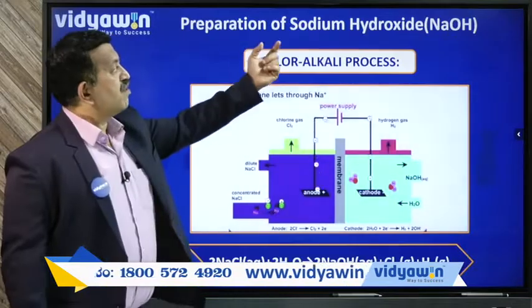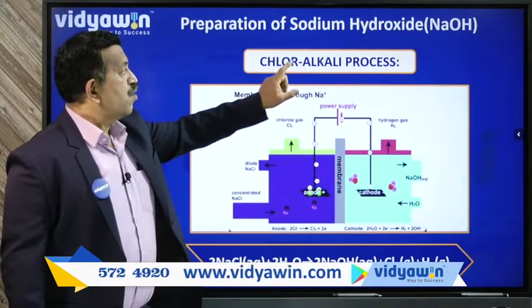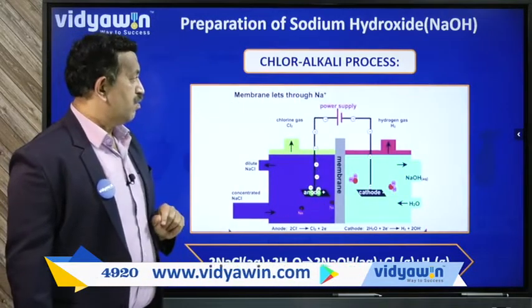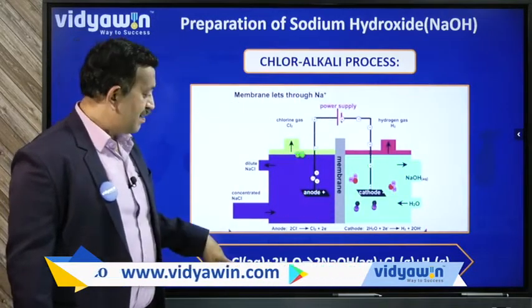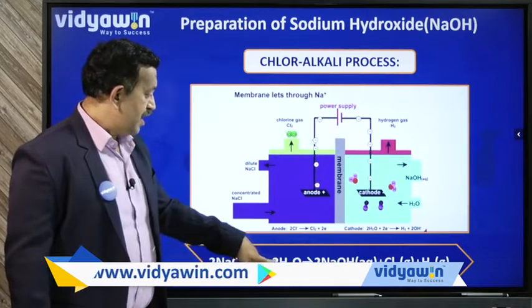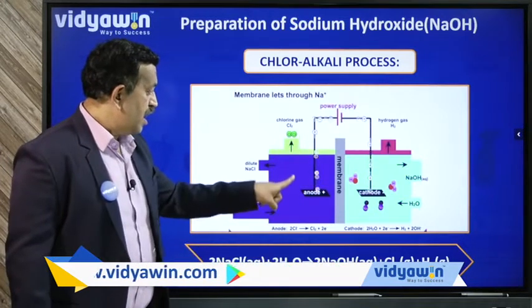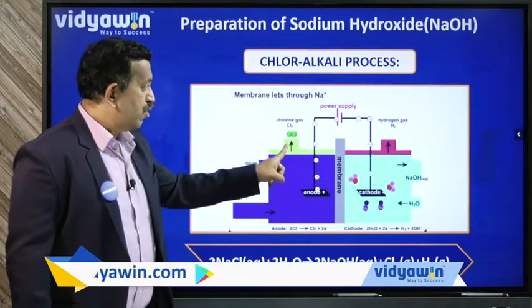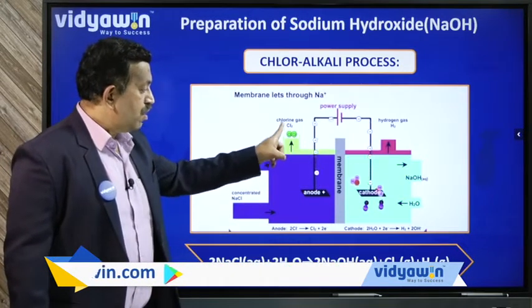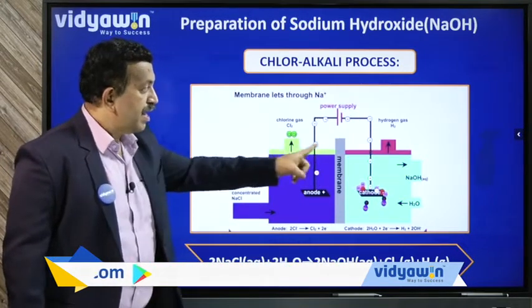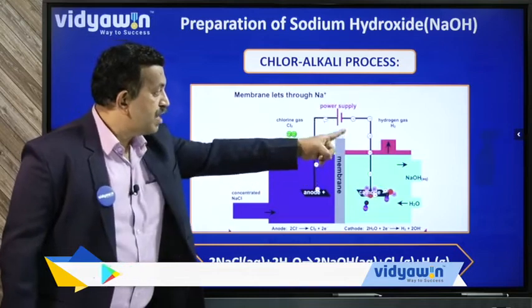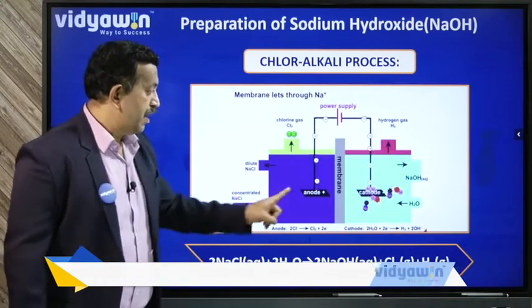Preparation of sodium hydroxide: here, the chloroalkali process — NaCl reacts with water. At the anode and cathode, chlorine will be liberated at the anode and hydrogen gas will be liberated at the cathode.